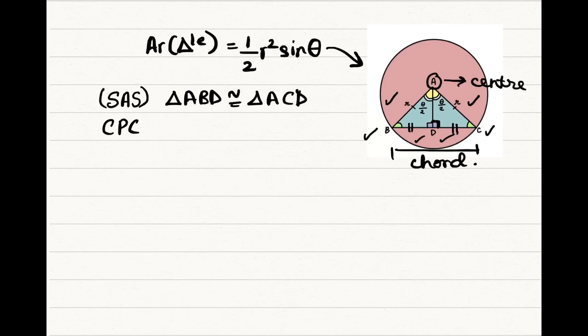From the CPCT, that is corresponding parts of congruent triangles, angle BAD is equal to angle CAD is equal to theta by 2.